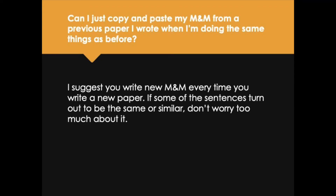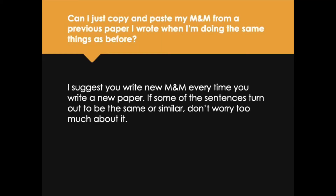You might ask: can I just copy and paste my Materials and Methods from a previous paper when I'm doing the same things as before? I don't think you should do that. As we mentioned when we talked about plagiarism, a word-for-word sentence appearing in more than one publication is not necessarily plagiarism. However, I suggest you don't just copy and paste — write a new Materials and Methods section every time you write a new paper. Then if some sentences happen to be the same, you don't need to worry too much about that.